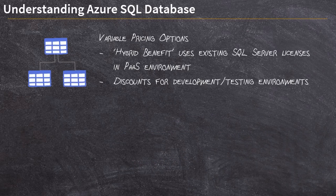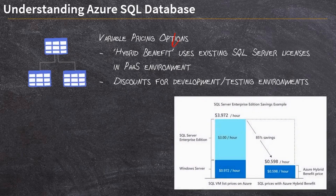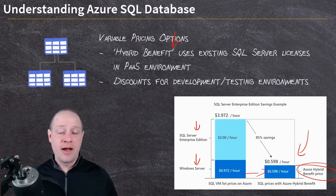Pricing for Azure SQL Databases is pretty cool — there are a lot of variable pricing options. One important one is something Microsoft calls the hybrid benefit. Typically, your pricing for Azure SQL Database includes the cost of your SQL Server as well as the cost of your underlying Windows Server — both have to be licensed. But when you use hybrid benefit pricing, you're only paying for your Windows Server because you are relying on your existing SQL Server licenses. This is also a choice available in the infrastructure-as-a-service options, where you host your own virtual machines and bring your own licenses.